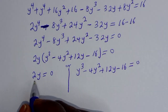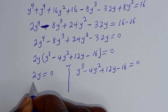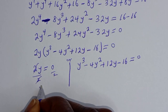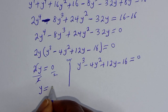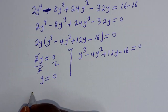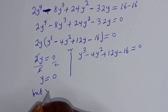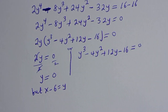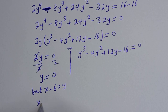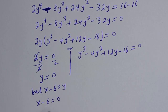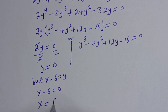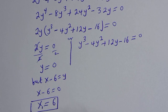Let's divide both sides by 2. This gives y equals 0. But x minus 6 equals y, so x minus 6 equals 0, therefore x equals 6. Let's call this solution S1, the first value of x.